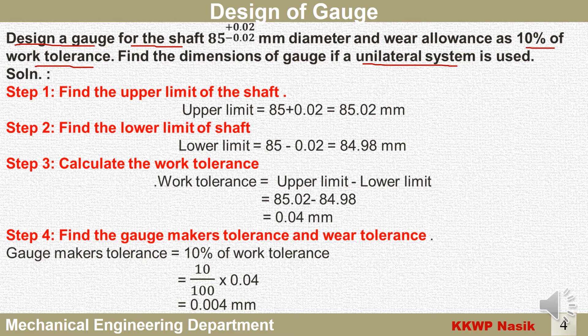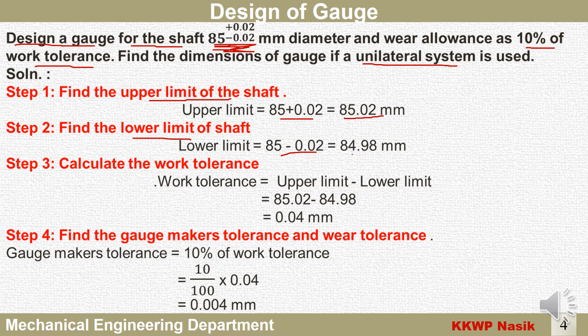We solve this according to the steps. First step: find the upper limit of the shaft. Given dimension is 85 ± 0.02, so upper limit equals 85 + 0.02 = 85.02 mm. Second step: lower limit equals 85 − 0.02 = 84.98 mm.